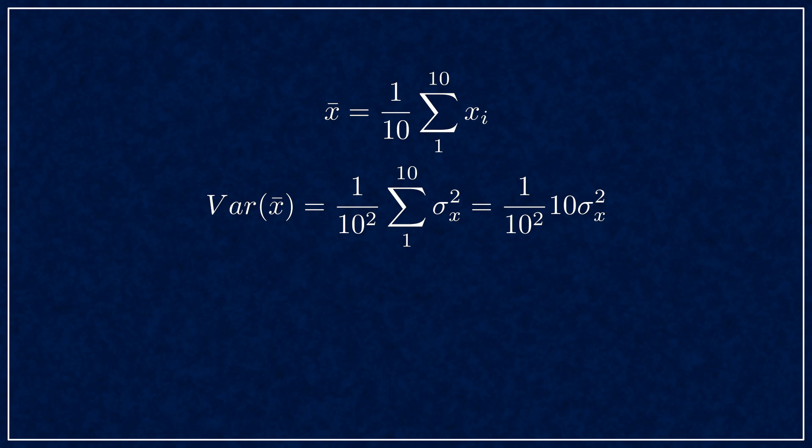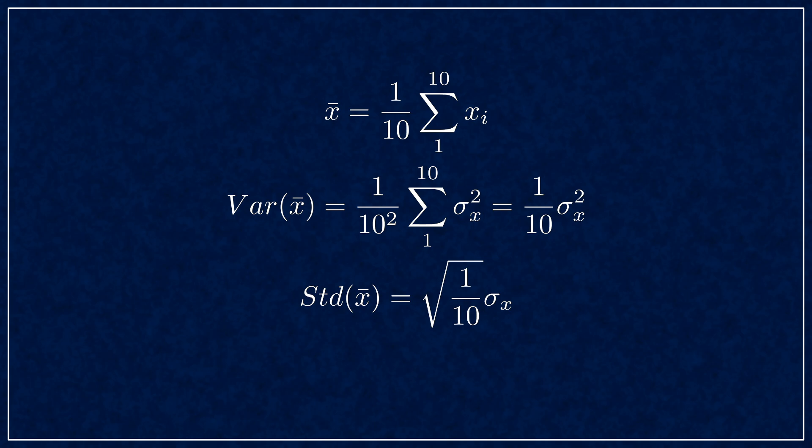According to our rules, the variance is scaled by the gain squared, so 1 over 10 squared. The individual variances of sigma x just add up. One of the 10s cancel out, so this means averaging 10 will reduce the variance by the factor of 10.